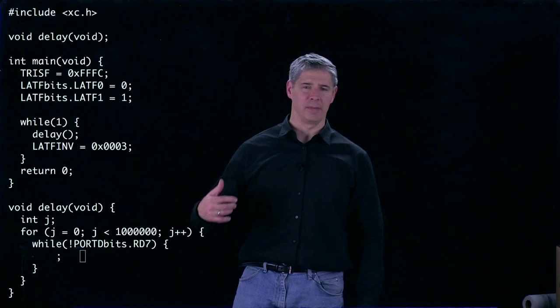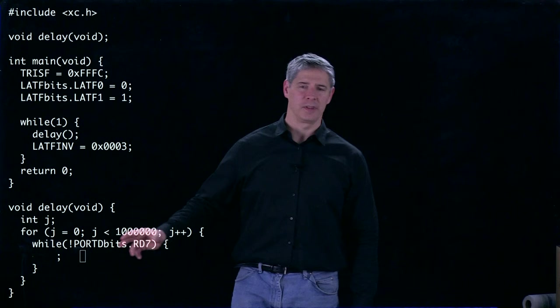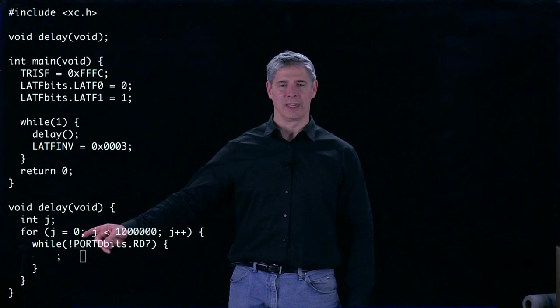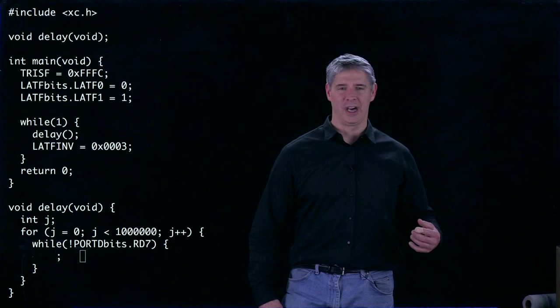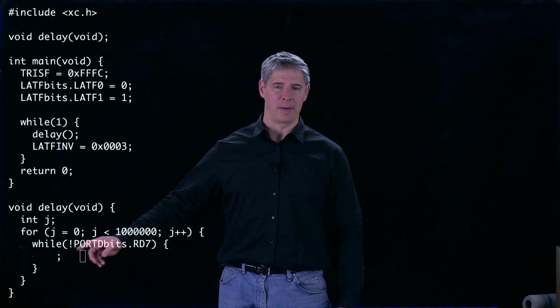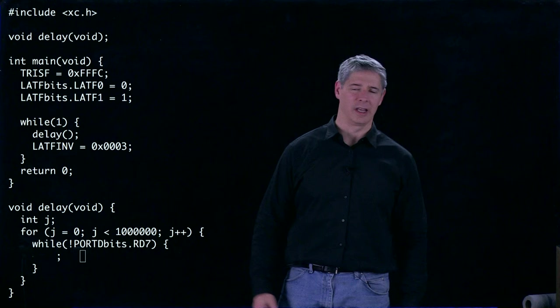It does this for loop a million times and every time it goes through the for loop it checks this value of PORTDbits.RD7. If this PORTDbits.RD7 has a non-zero value, then when we negate, we take the logical negation of it. So non-zero value means true. If we take the logical negation of it, we get false. So this becomes while false. Then it's going to pop out of the while loop and continue with the for loop and do it a million times and then exit delay.